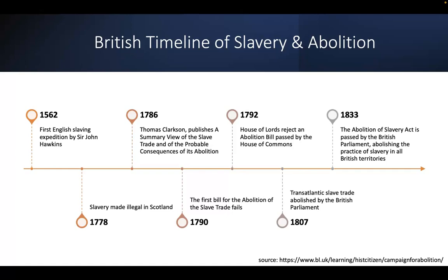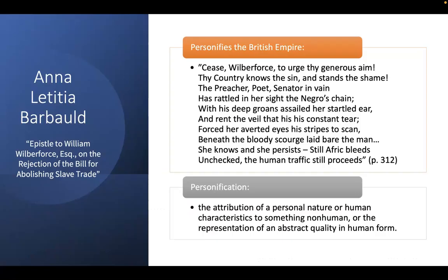These are by no means the only writers talking about this in their poetry. Many men, many women, writing essays, politicians, poets, philosophers — all weighing in on this issue. The foremost figure in this movement was a man named William Wilberforce, who advocated for the Committee for the Abolition of the Slave Trade, which first met in 1787. He was on the floor of Parliament arguing for abolition and met, as we saw on the timeline, failure after failure.